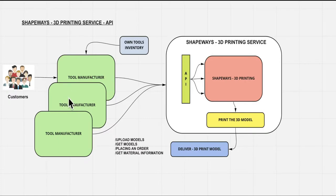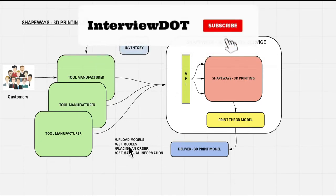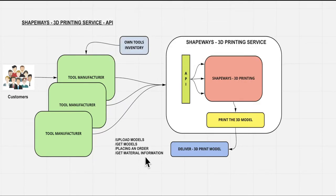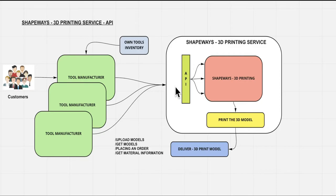Whenever the customer chooses such a tool, what will happen is behind the scenes we'll be making an API call to Shapebase — say, upload the model, get model information, place an order for a particular tool, or get the material information. So we are going to make an API call saying, could you please create this particular tool? Once Shapebase receives this request, they will print a 3D tool and once the printing is done, they will deliver it to the address. This is how my company can integrate with Shapebase to help grow the business.